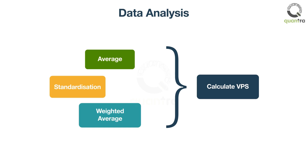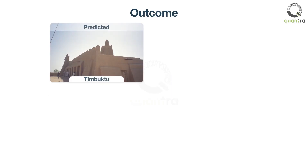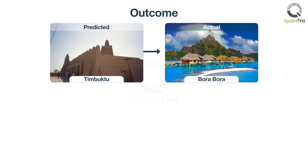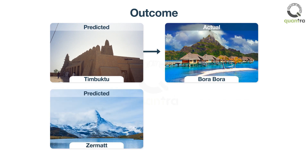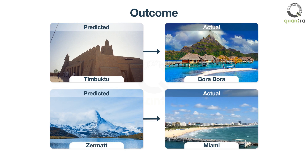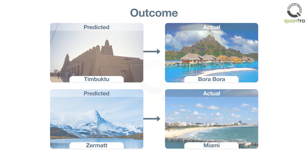An average of all scores might not work. You might need to standardize your numbers, a weighted average, or a regression analysis, and so on. There are plenty of data analysis techniques you can work with. What matters is how relevant your list of choices was. Did your model predict Timbuktu when actually your choice was Bora Bora? It is quite important to test the accuracy of your analysis by working with different data points.